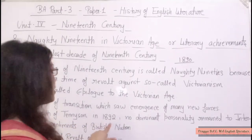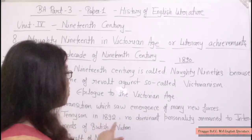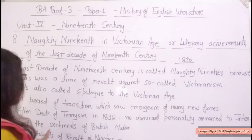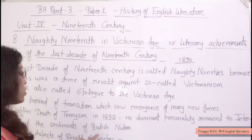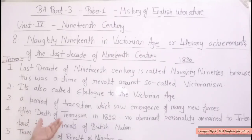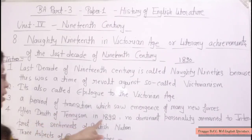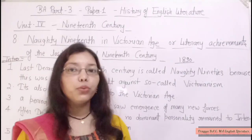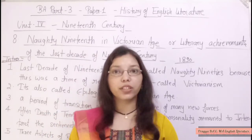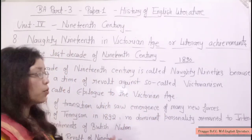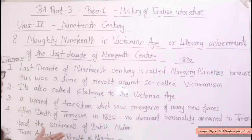After the death of Tennyson in 1892, no dominant personality remained to interpret the sentiments of the British nation. This became the age of tension — after his death, no author had the capacity to express the feelings of the British nation.